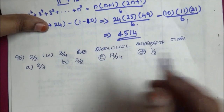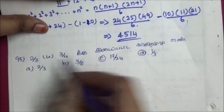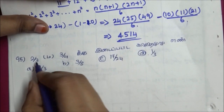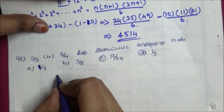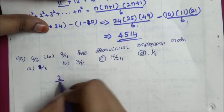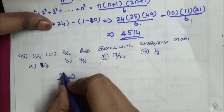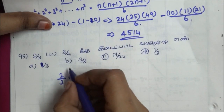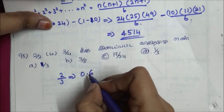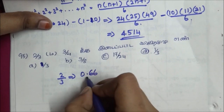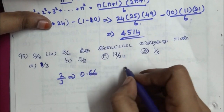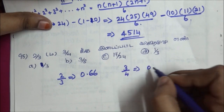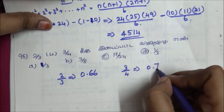Next question: comparing fractions and decimals — 2/3 is 0.66, and 3/4 is 0.75. We have 7 times involved here.